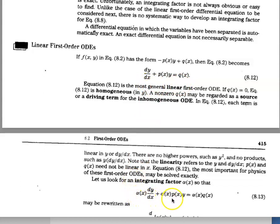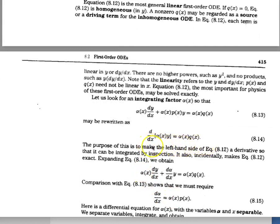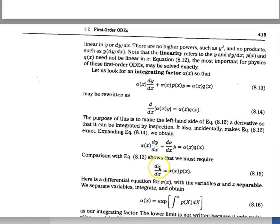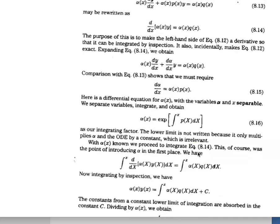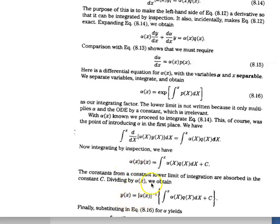The integrating factor alpha is multiplied through the equation, and the left hand side can then be integrated as well as the right hand side. This gives an equation for d(alpha)/dx equal to something that is a function of just x, so you can integrate it to find the integrating factor. Once you have the integrating factor, you find the dependent variable as one over alpha times the integral of alpha times Q(x), plus the constant of integration c.